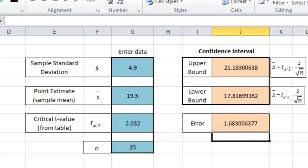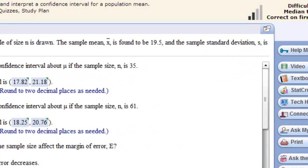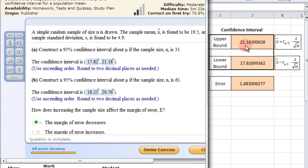And now we are able to go and quickly fill this out. The upper bound was 21.18. Upper bound 21.18. Remember this comes second, it is always an interval. Smaller number to bigger number. And 17.82.